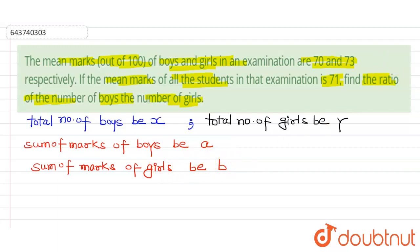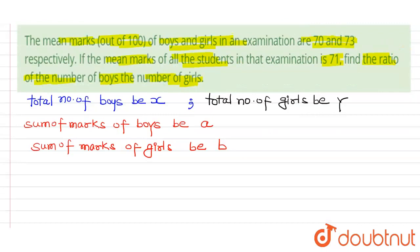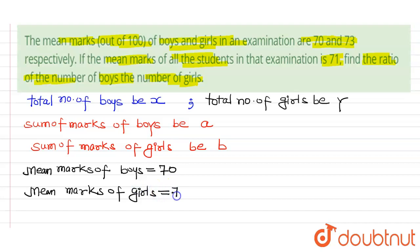And it is given that mean marks of boys is 70, and the mean marks of girls is 73.